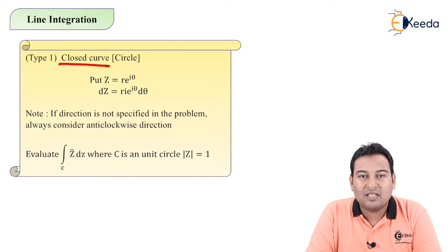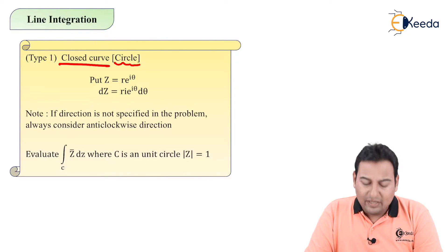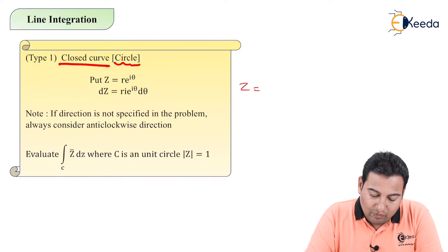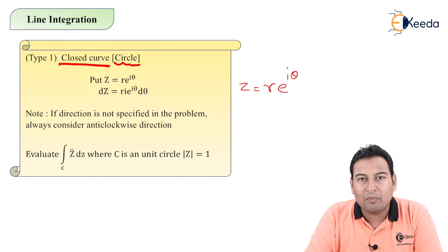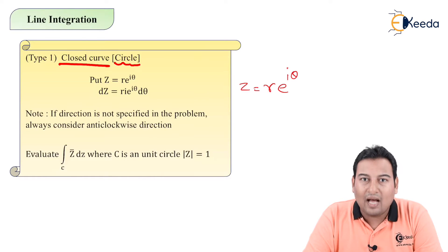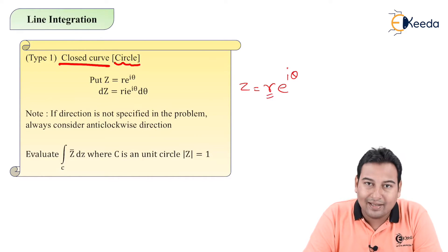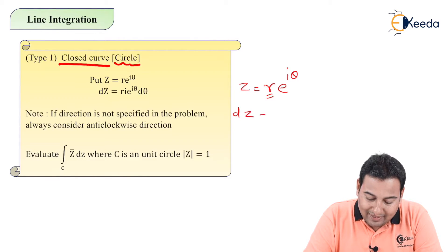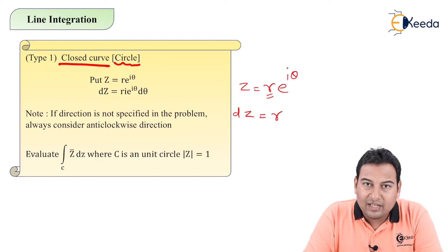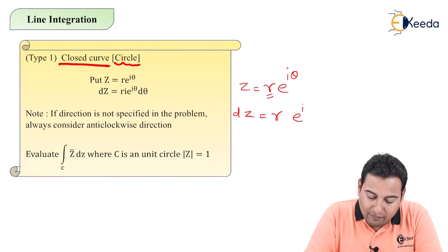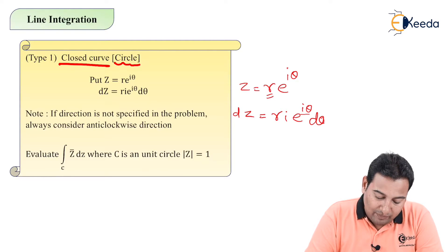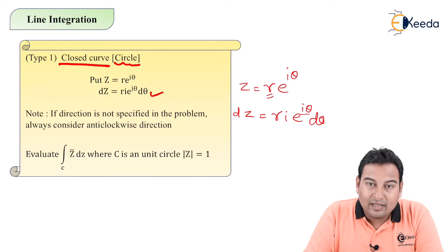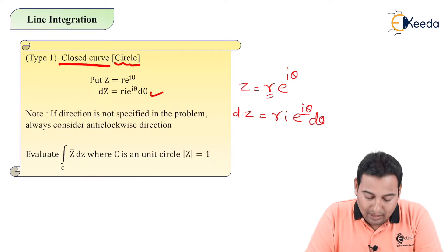For closed curves, we are talking specifically about circles. You need to remember this substitution: z is equal to r·e^(iθ). Whenever you get a closed curve like a circle, use this substitution. Here r is the radius. Taking the differentiation, dz equals r·i·e^(iθ)·dθ, applying the chain rule where the differentiation of iθ gives i·dθ.